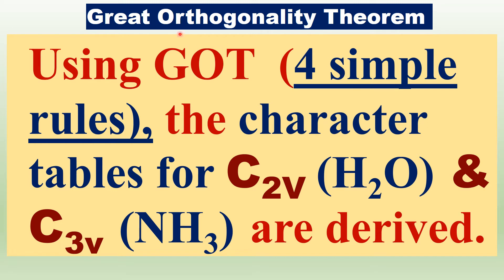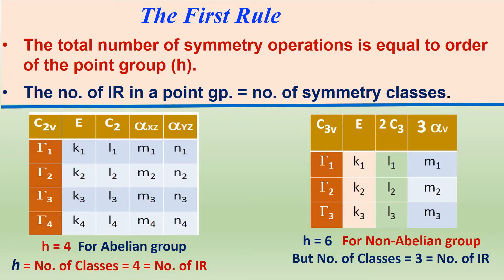Using the Great Orthogonality Theorem, four simple rules — that is, the four important properties of irreducible representations — are used. The character tables for C2V and C3V molecules are derived here. According to the first rule, the total number of symmetry operations is equal to the order of the point group, H.